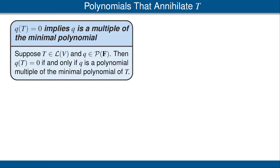The next result gives a complete description of the polynomials q such that q applied to T is the 0 operator. The result states that q(T) = 0 if and only if q is a polynomial multiple of the minimal polynomial of T. Let's look at the proof of this result.